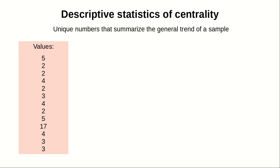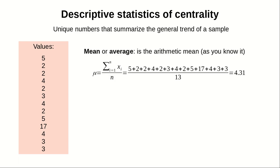For instance, the mean or average is the arithmetic mean as you know it. So in that case, using a bit of mathematical notation, mu, the mean, equals 4.31.